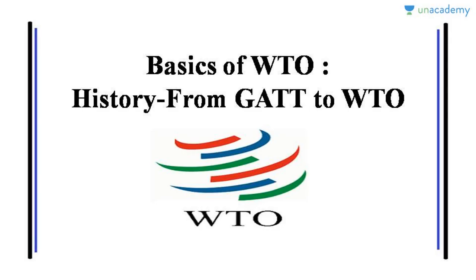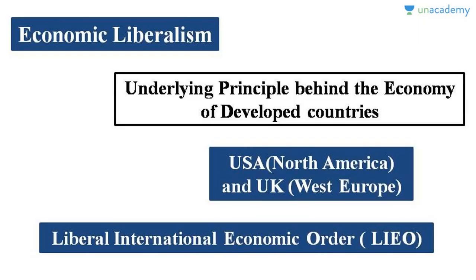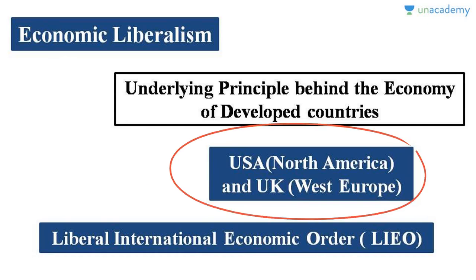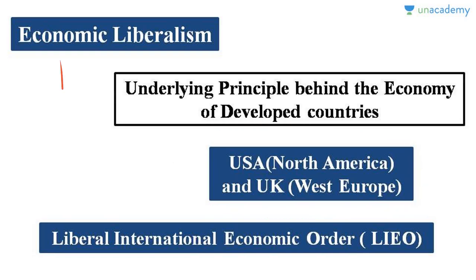In today's lesson, we are going to understand the history of the World Trade Organization — the journey from GATT to WTO. The developed countries of North America and Western Europe believe in economic liberalism. They want international trade to happen because they have trade surplus continuously. They support this theory and want fewer barriers to exist for international trade.